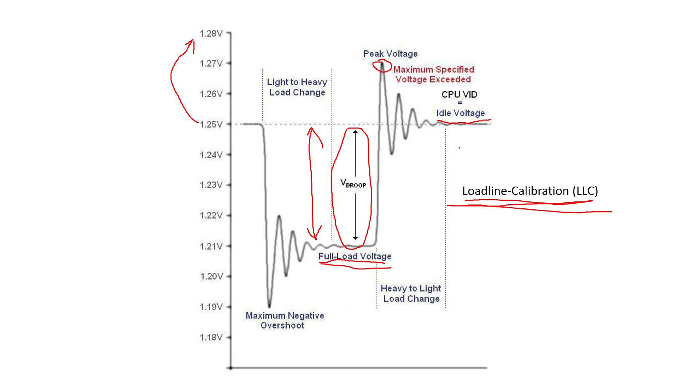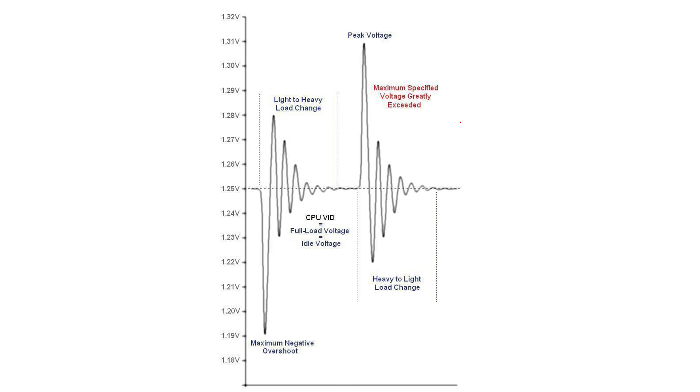So now we will take a look at an example. What happens if you set the loadline calibrations to the maximum so the load voltage is exactly at the same value like the idle voltage? This would be this example. You can see idle voltage 1.25V, load voltage would be here also 1.25V, and again idle voltage also 1.25V.